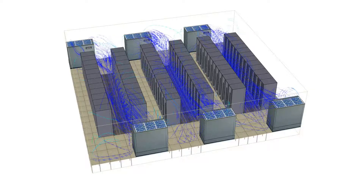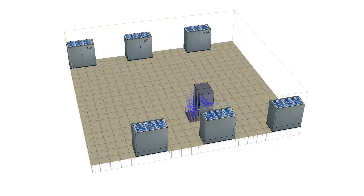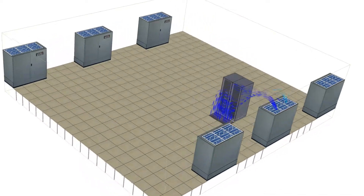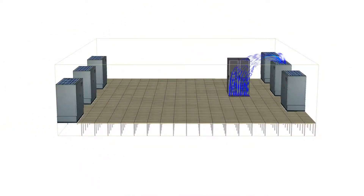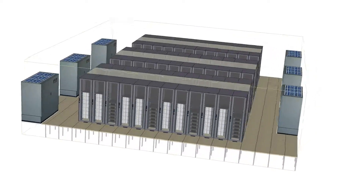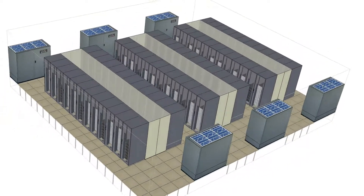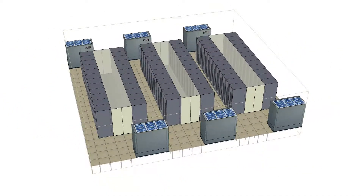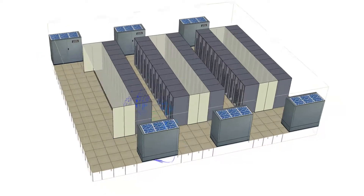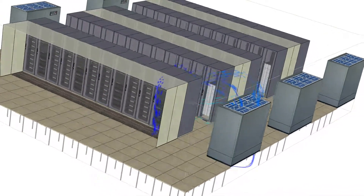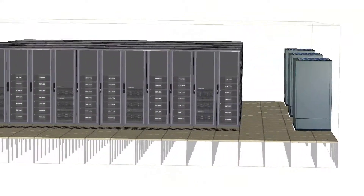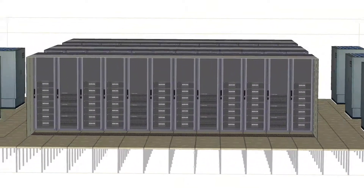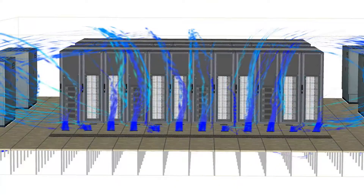Bypass airflow can occur for several reasons. In an open room, ACUs may pull air directly from the floor grills. In a contained cold aisle, air may be forced through gaps in the cabinets, bypassing the equipment. Another common source of bypass airflow is cable penetrations and other poorly sealed floor holes.